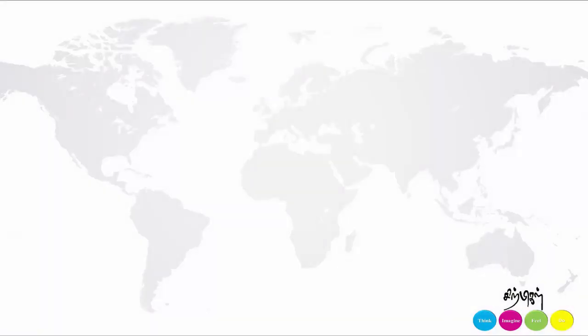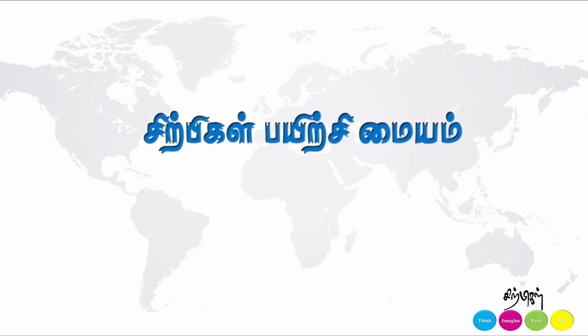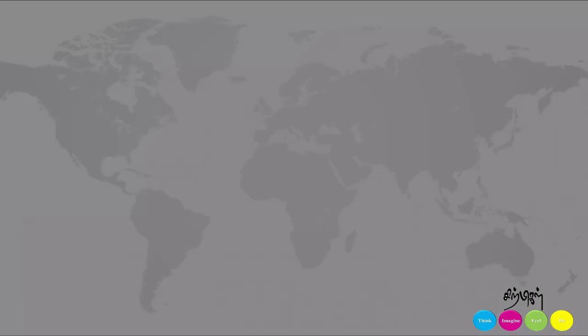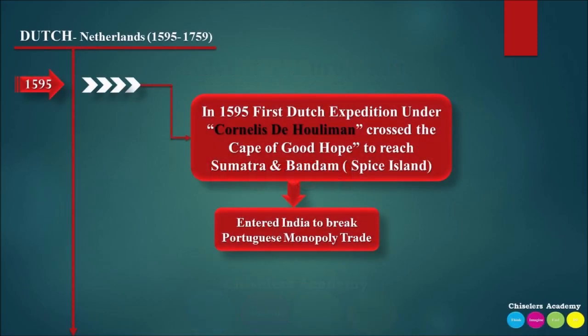In the advent of Europeans, the second European country is the Dutch. The Dutch came from the Netherlands. They were the first to cross the Cape of Good Hope and had no direct route previously. They reached the Spice Islands first among later European arrivals.